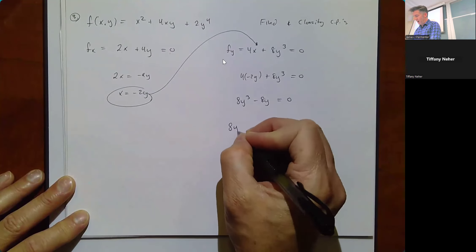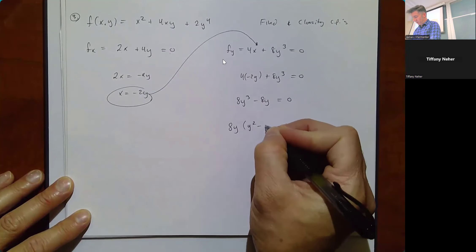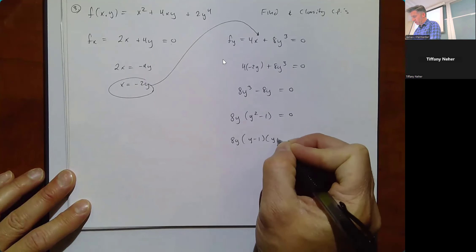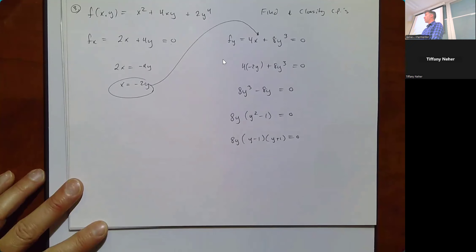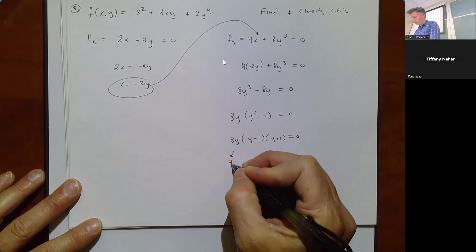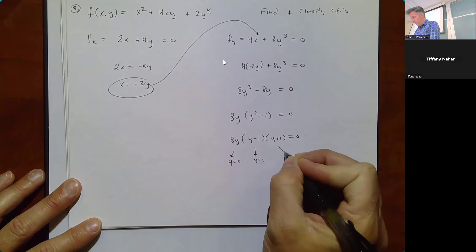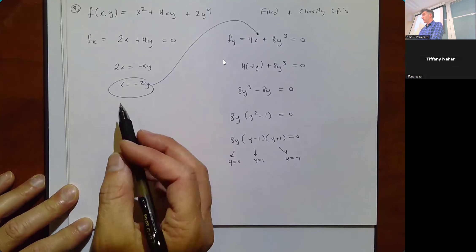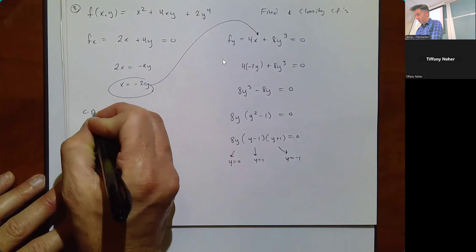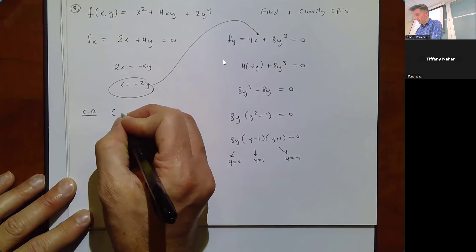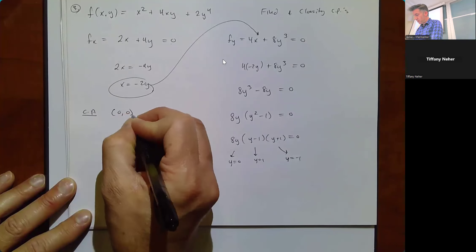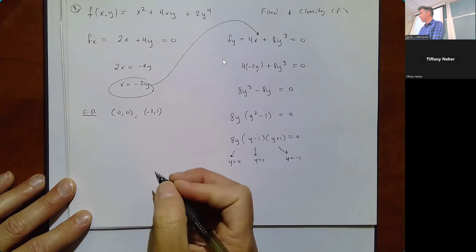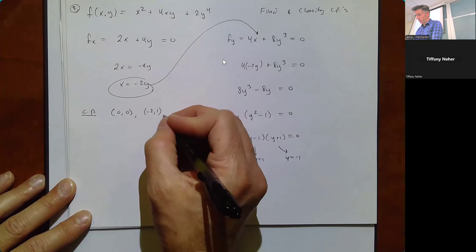Plugging each y back into x = -2y: if y = 0, x = 0, giving critical point (0, 0). If y = 1, x = -2, giving (-2, 1). If y = -1, x = 2, giving (2, -1). Those are our three critical points.